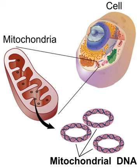Human mitochondrial DNA was the first significant part of the human genome to be sequenced. This sequencing revealed that the human mtDNA includes 16,569 base pairs and encodes 13 proteins. Since animal mtDNA evolves faster than nuclear genetic markers, it represents a mainstay of phylogenetics and evolutionary biology. It also permits an examination of the relatedness of populations, and has become important in anthropology and biogeography.